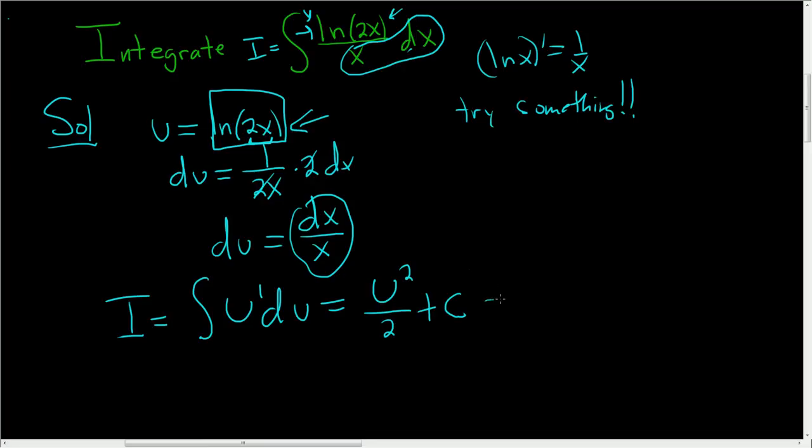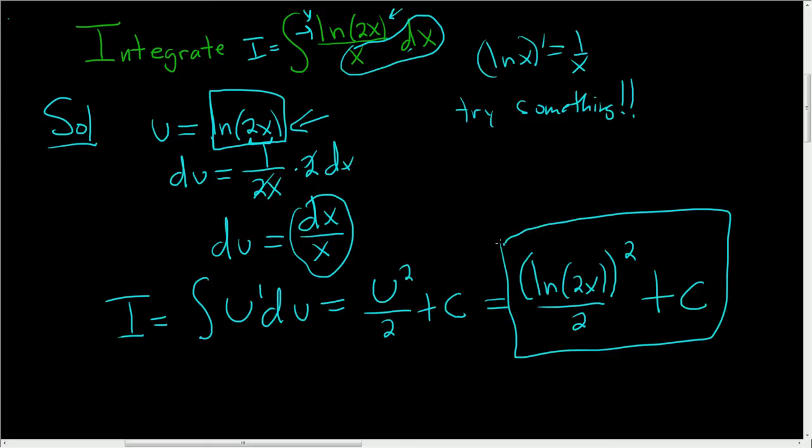So, this will end up being the natural log of 2x over 2. And this piece here in the numerator is squared plus a constant. So, pretty easy problem. That was just a basic one.